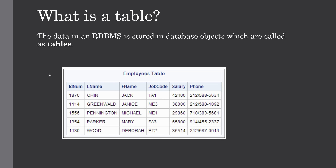The fields in the employees table are idnum, lname, fname, jobcode, salary, and phone. A field is a column in a table designed to maintain specific information about every record — so idnum represents employee ID, lname the last name, fname the first name, and so on. A record (or row) is an individual entry in a table — there are five records in this example. A column is a vertical entity containing all information associated with a specific field in the table.